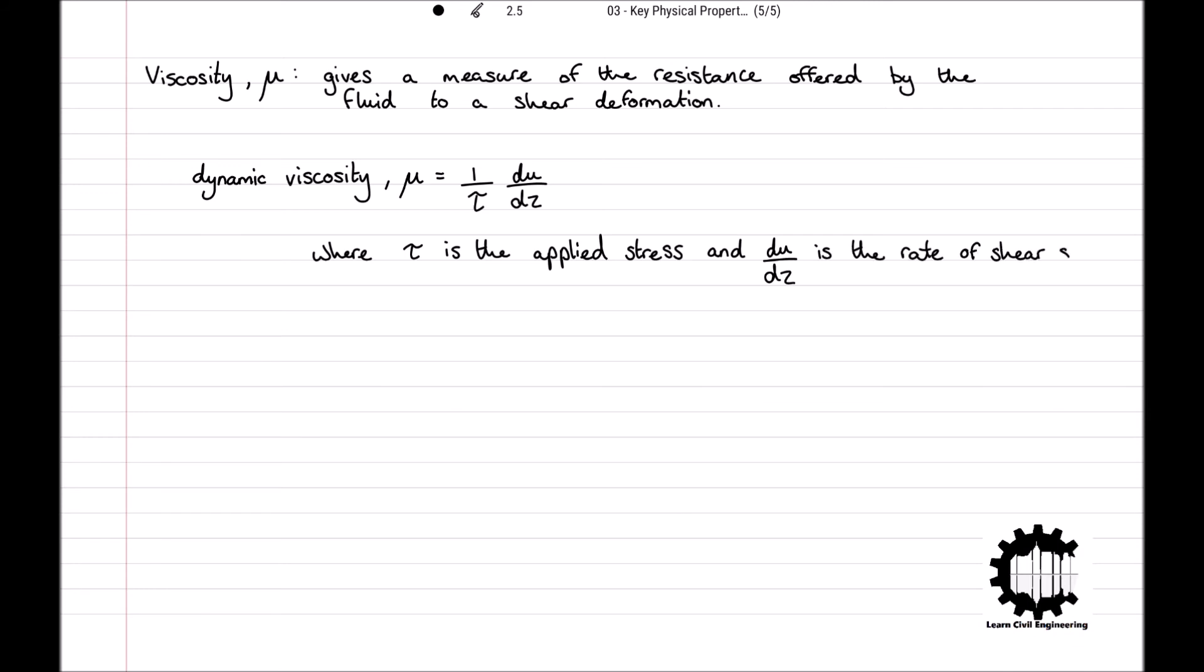The viscosity of a fluid is a measure of the resistance offered by the fluid to a shear deformation. A lecture will be coming out in the near future, going into more detail on the dynamic and kinematic viscosity of a fluid, and how their equations are derived, but for now, the dynamic viscosity, denoted μ, is defined as μ = 1/τ × du/dz, where τ is the applied shear stress and du/dz is the rate of shear strain. Dynamic viscosity has dimensions of ML^-1T^-1 and SI units of kg/m/s or pascal seconds.